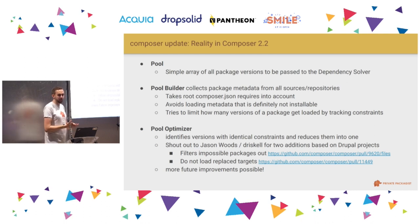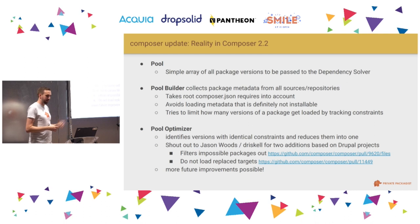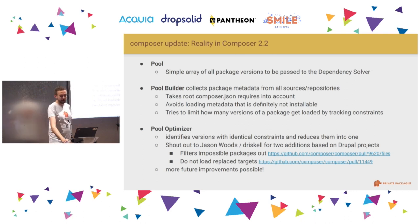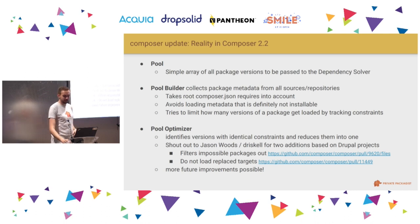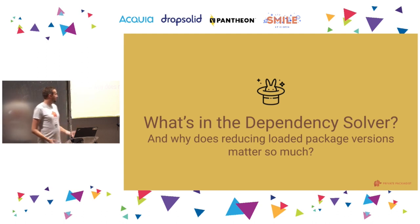Thanks to Jason Woods from the Drupal community, who provided ideas for two additions to this optimizer. Basically it identifies specific versions that have no chance of getting picked by the solver and throws them out before we even look at them. This reduces the amount of metadata kept in memory — and memory was our big problem — as well as the amount of data the solver needs to analyze. So what's in this magic hat? What's the dependency solver, and why does reducing package versions matter so much?